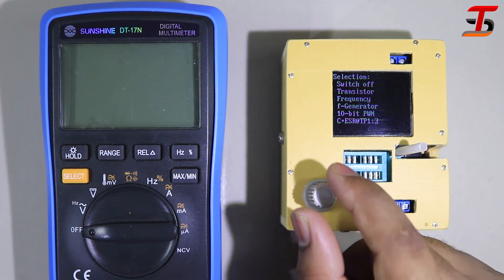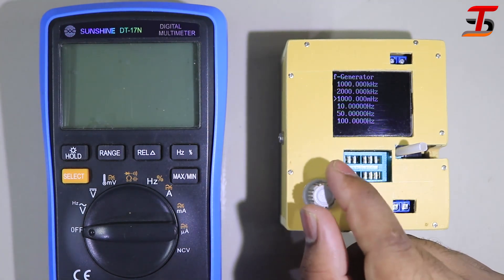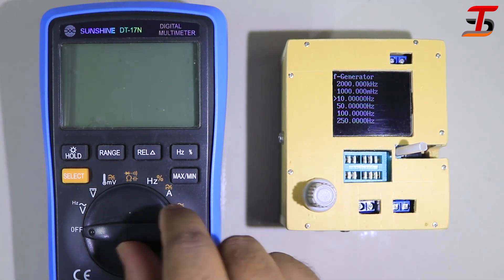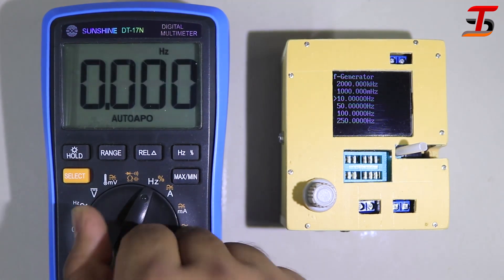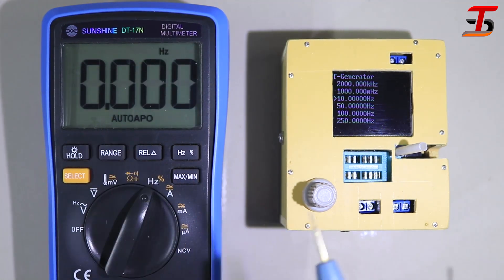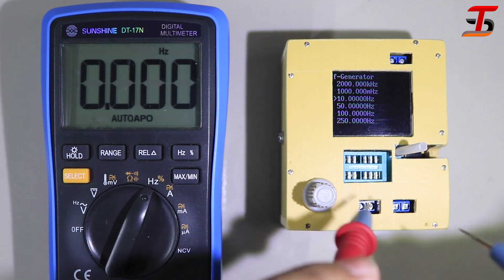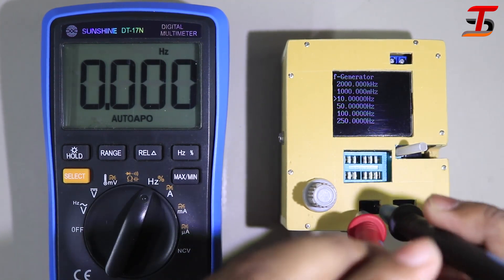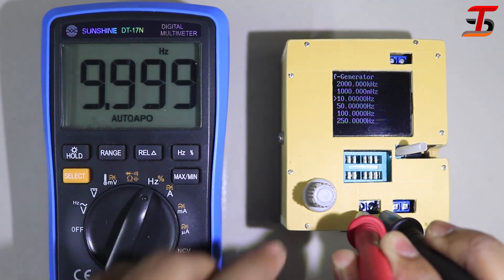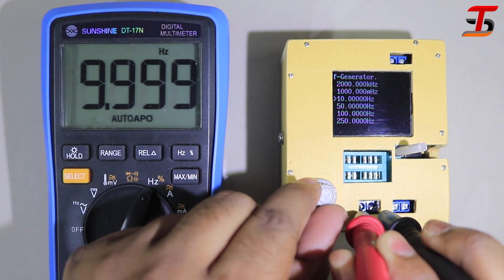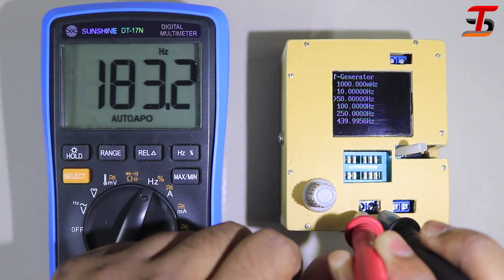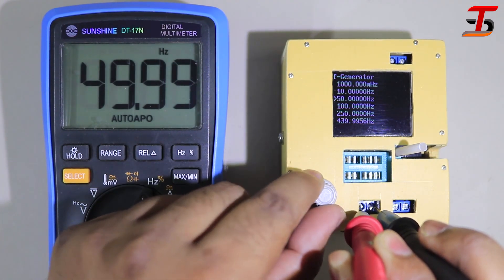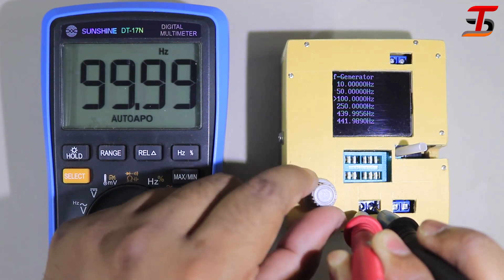You can also generate the frequency 10 Hz to 1000 MHz from this device. I want to confirm the frequency range. Is it right to show the result? I was totally surprised.